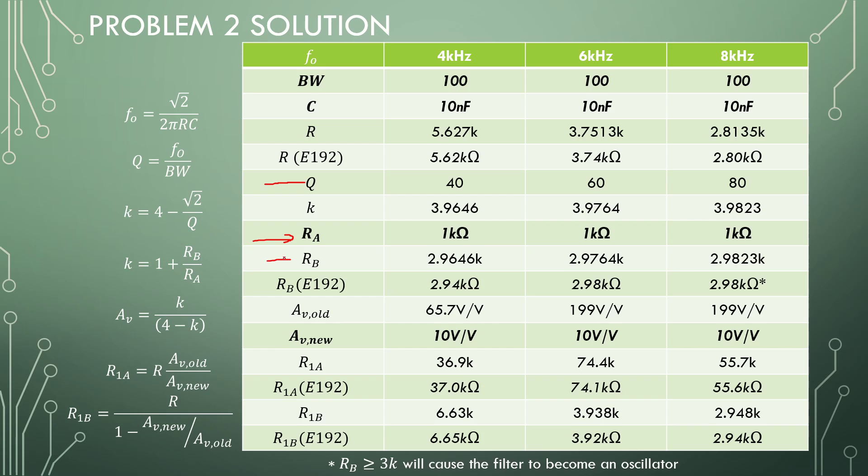And with our K value we can choose all our A values as 1K and we find our RB values, and you'll see that this is 2.94 but the last two is very close to the same value. And for E192s we don't have anything closer to 2.98, so if this becomes larger than 3K it will be an oscillator. So these two we will have the same Q with resistors and we will actually see that in the results.